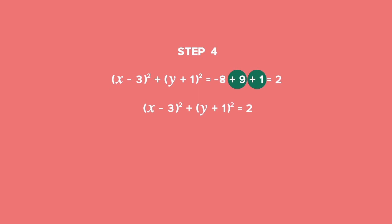So our equation is now x minus 3 all squared plus y plus 1 all squared equal to 2. So the centre of the circle is at 3, negative 1 and the radius of the circle is the square root of 2.